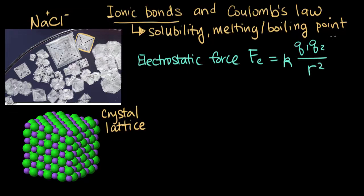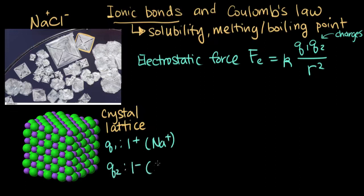Here Q1 and Q2 are the charges. In the case of sodium chloride, for example, Q1 might be 1 plus from our sodium ion, and Q2 might be 1 minus from our chloride ion.